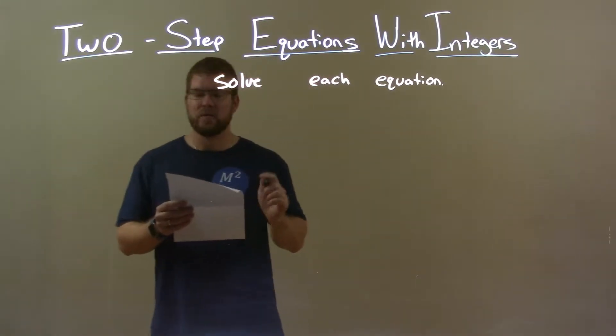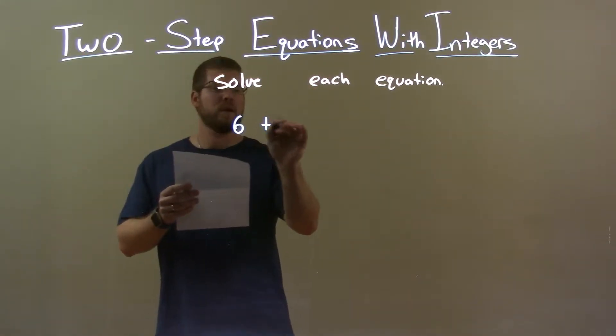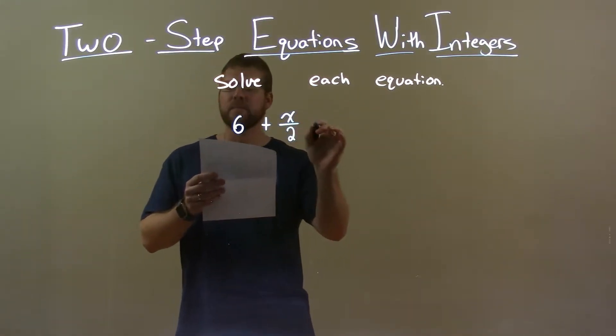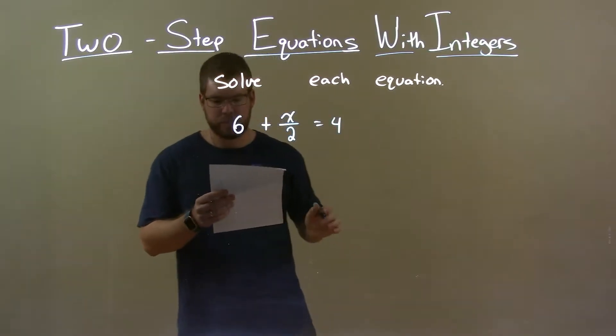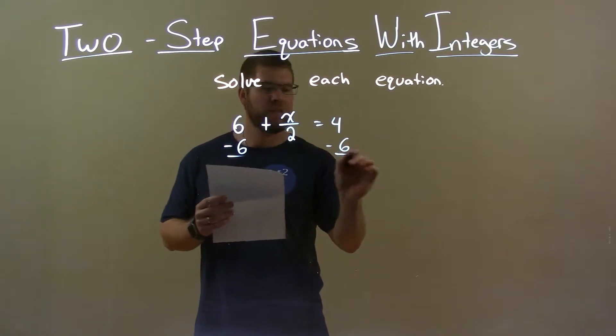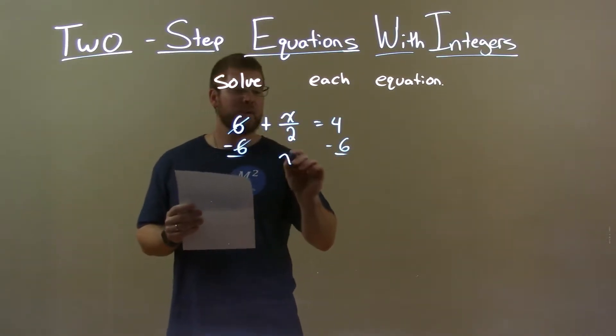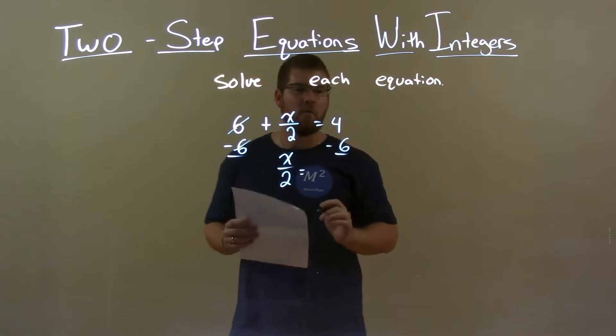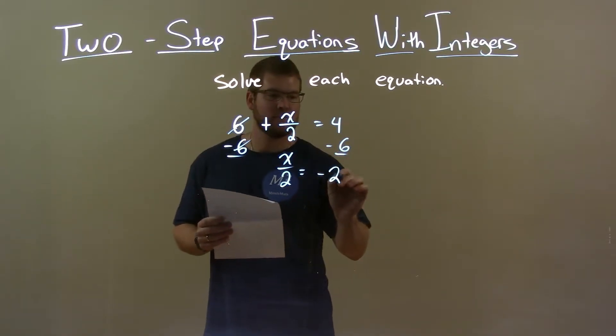If I was given this equation, 6 plus x over 2 equals 4. First step, I want to subtract 6 from both sides. That eliminates the 6 on the left, giving me x over 2 by itself on the left. Now, 4 minus 6 is negative 2.